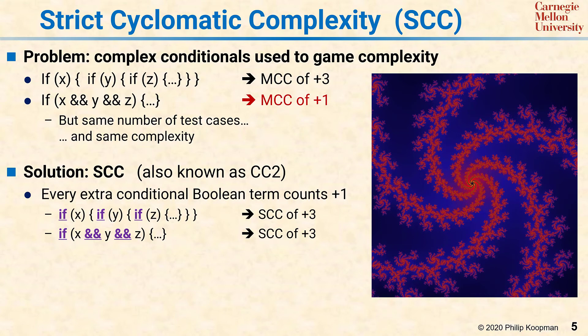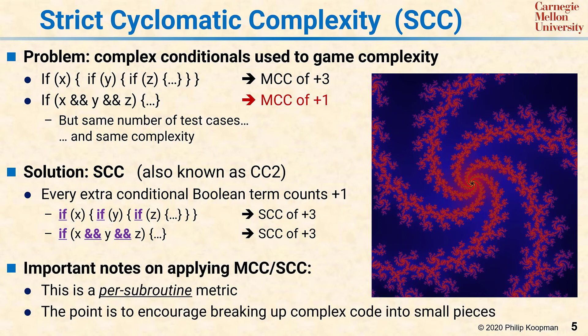There are some important notes for applying either MCC or SCC. The biggest one is that this is a per-subroutine metric, so if you have one large piece of spaghetti code, breaking it up into small, easily testable subroutines improves the SCC of each one without necessarily changing the complexity of the overall module. But that's okay, because the point of this metric is to encourage you to break up large chunks of complex code into smaller pieces that are easier to understand and easier to test.